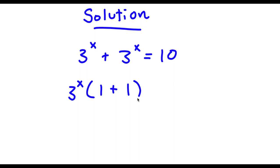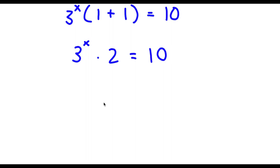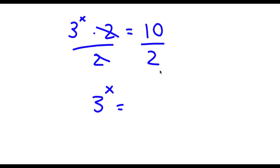So now I have 3 to the power of x times 1 plus 1 is equal to 10. Now 1 plus 1, that's equal to 2. So now I have 3 to the power of x times 2 is equal to 10. Now if I divide both sides by 2, these two cancel out. Now I'm left with 3 to the power of x is equal to 10 divided by 2, which is 5.